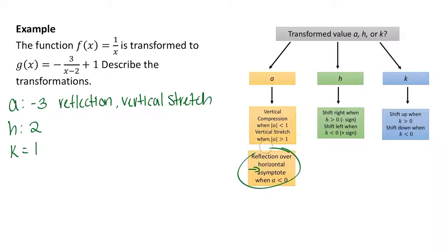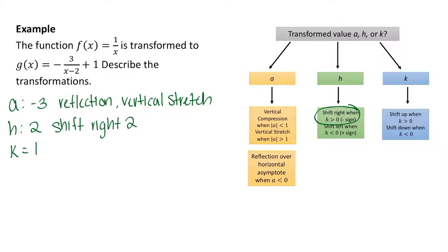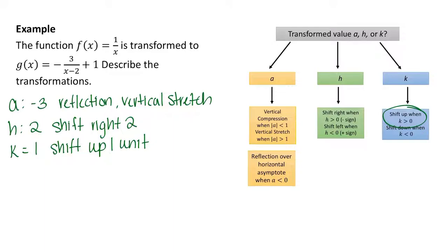Thinking about h equals 2: since h equals 2 gives us a minus sign in the problem, that is a shift right 2. Finally, k equals 1, and since k is greater than 0, that is a shift up 1 unit. So we have a graph that's reflected, vertically stretched, shifted right 2, and up 1.